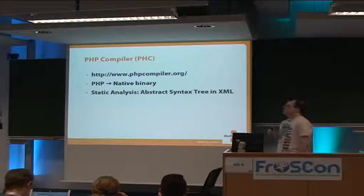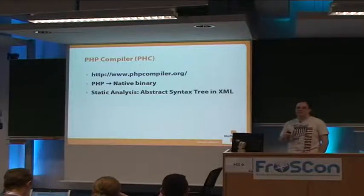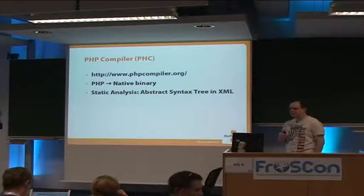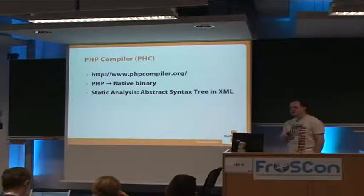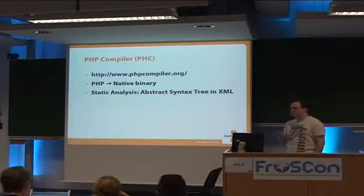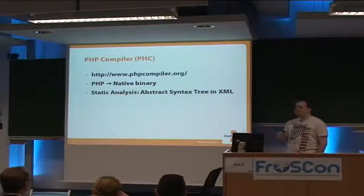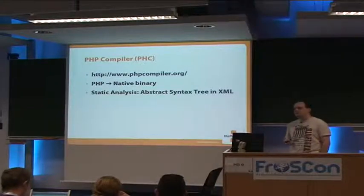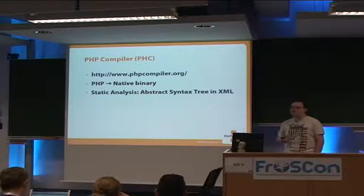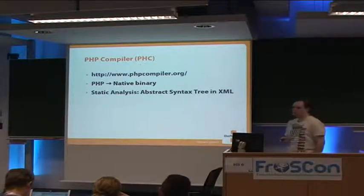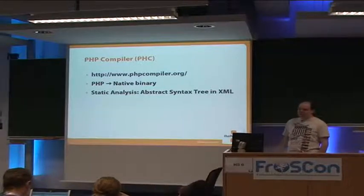Even before HipHop, there was a way to compile PHP code down to a native binary — this is the PHP compiler. It started as a research project at a university in Ireland. The project still exists and still works, but doesn't really implement a recent version of PHP. It's nice to work with because along the way it gives you an abstract syntax tree of your PHP source code in XML format, and you can do interesting stuff with that — like using XSLT-like checking rules, replacing PHP Code Sniffer or PHP Mess Detector, and operating on that abstract syntax tree.